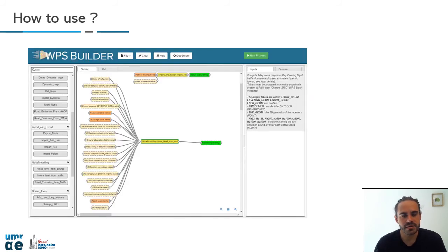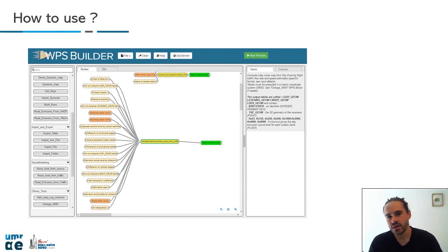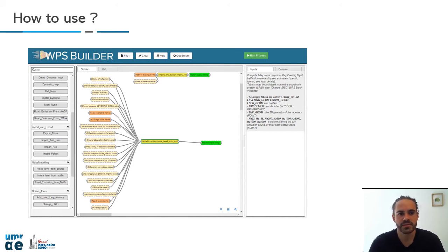This is a zoom on the interface platform. Here you can see, for example, how to compute noise level directly from traffic, and it shows what the output will be with this particular box.